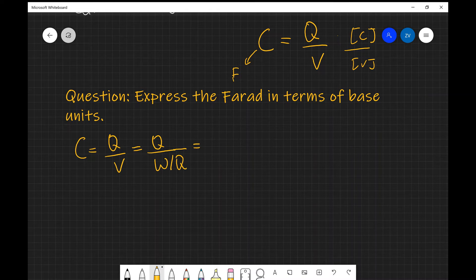Because I'm dividing by Q in my denominator, what I can do is multiply by the inverse. So this is going to equal Q multiplied by Q divided by W, which is equal to Q squared divided by work done.